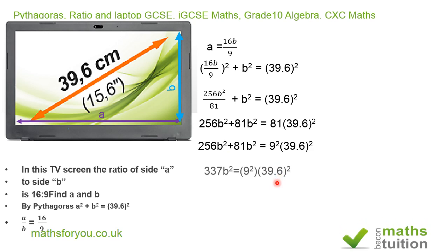If we collect like terms and add these two b² together, we end up with 337b² = 9²(39.6)².